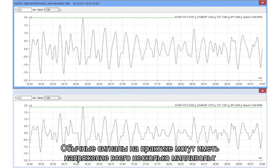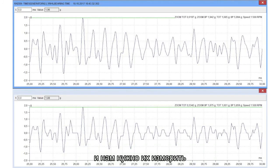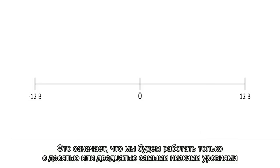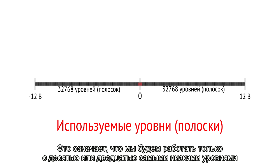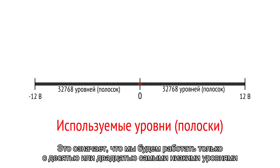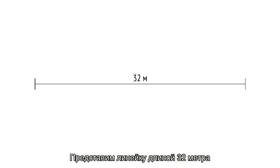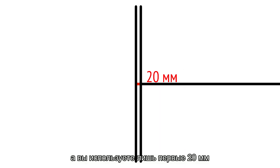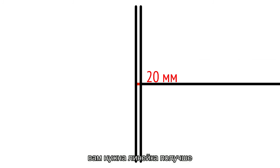Normal signals in practice can have only several millivolts, and we need to measure them. That means we would work with just 10 or 20 of the lowest levels out of the 32,000 available. Imagine a scale 32 meters long and you only use the first 20 millimeters for measurement. It is bad news — you need a better scale.